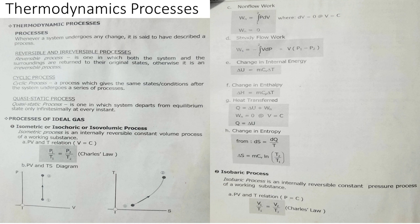Then we have processes of ideal gas. First is the isometric, or isochoric, or isovolumic process. This process is an internally reversible constant volume process of a working substance. We have a P, V, and T relation where V is constant. From Charles' Law, we have P1 over T1 equals P2 over T2.